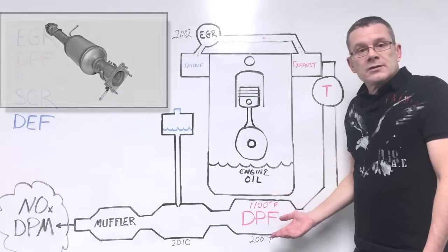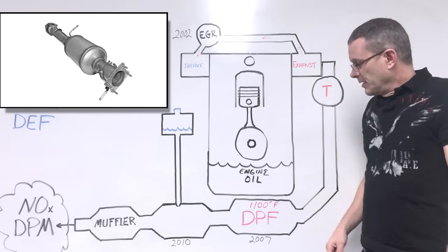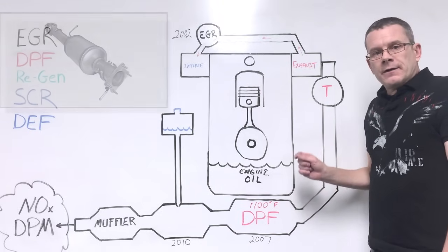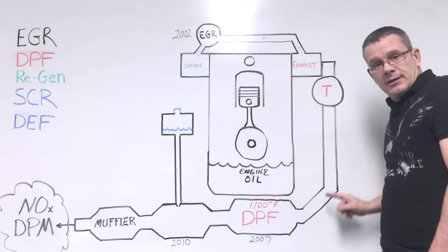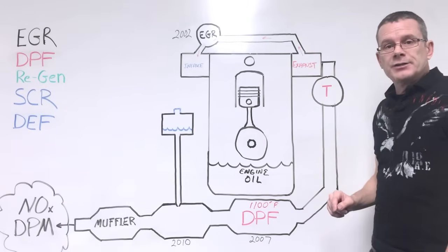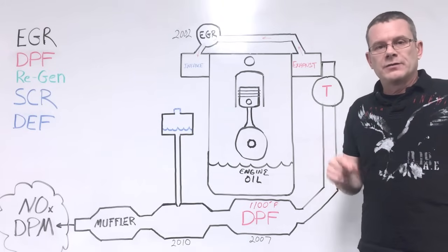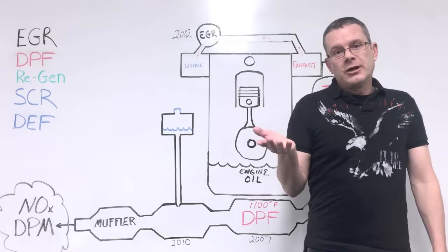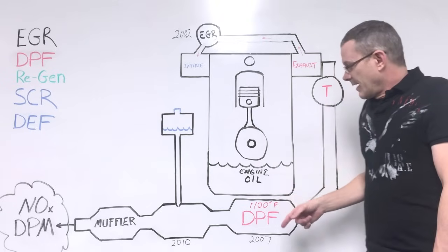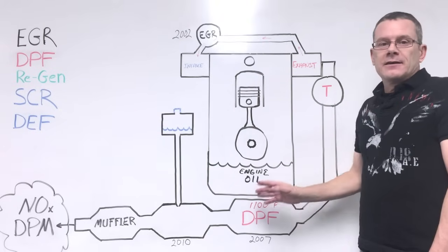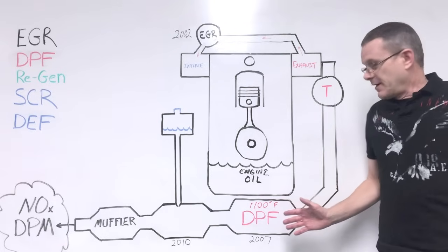The DPF is the Diesel Particulate Filter. It kind of looks like a muffler, about the same size and shape, but it's a very fine filter. The soot and exhaust smoke that's coming out of the engine is caught in a screen that filters down to one micron. That works really good for a short while. At some point, however, the gooky soot starts plugging up the DPF.